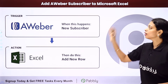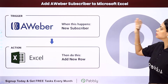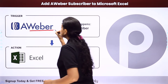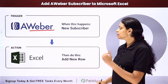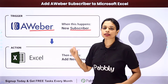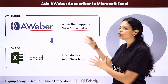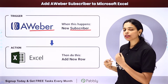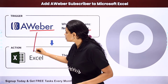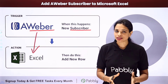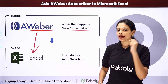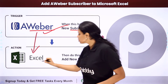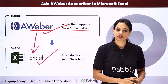In this video, we are going to see how to add AWeber subscribers to Microsoft Excel. Let's say you are using AWeber as an email marketing software and you want that every time there is a new subscriber added, this information should be shared in your Microsoft Excel spreadsheet. This can be done by integrating these two applications using Pabbly Connect, where your trigger application would be AWeber and your action application would be Microsoft Excel.